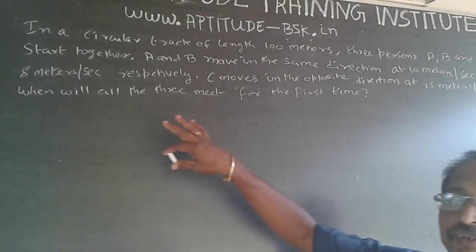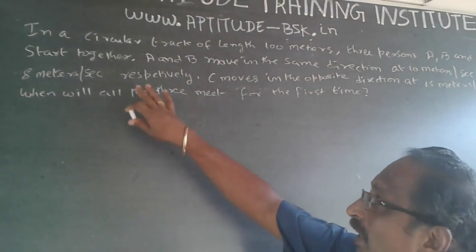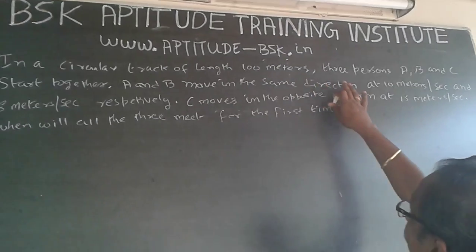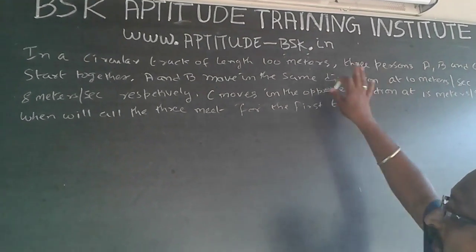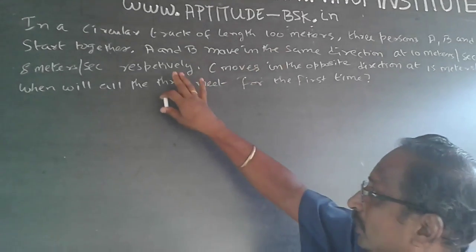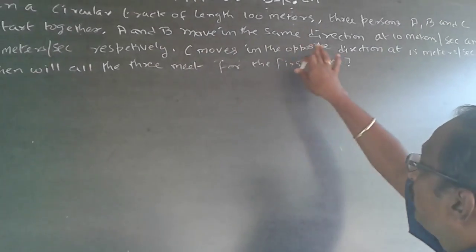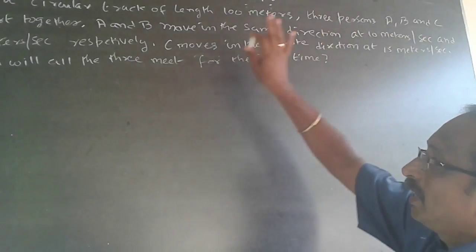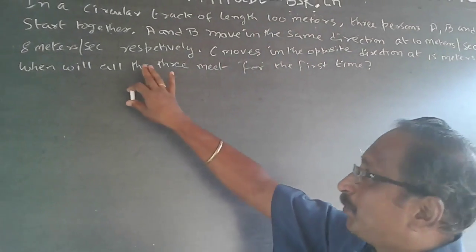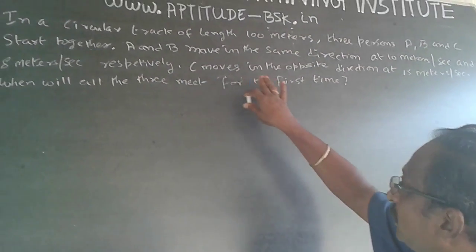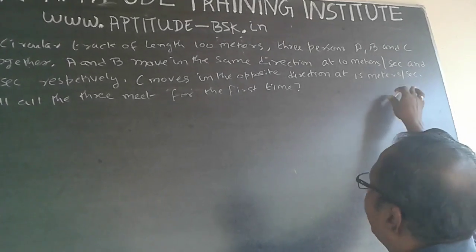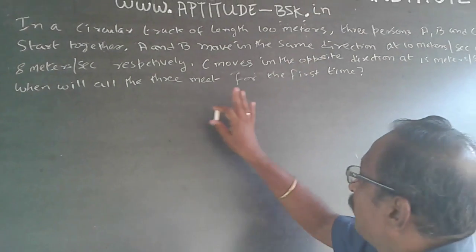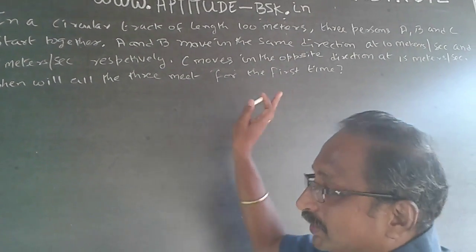The question I am going to handle now is: in a circular track of length 100 meters, three persons A, B and C start together. A and B move in the same direction at 10 meters per second and 8 meters per second respectively. C moves in the opposite direction at 15 meters per second. When will all three meet for the first time?